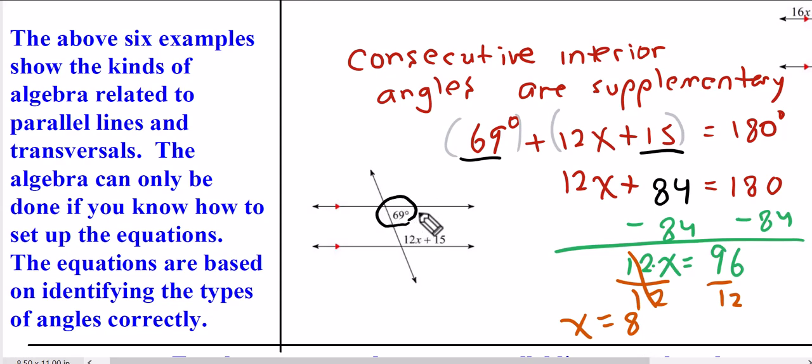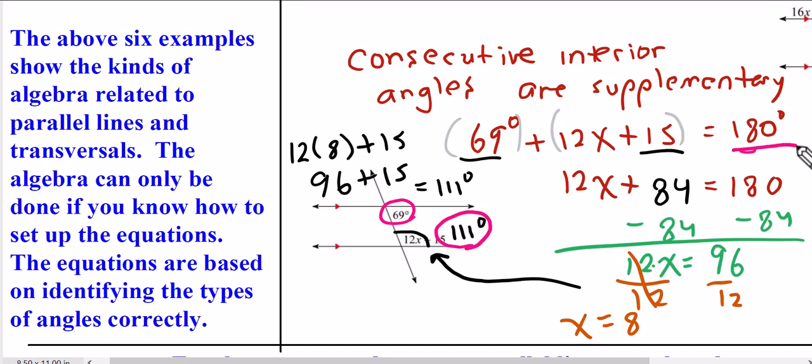Now, I know this angle is already 69 degrees. This is not 69 degrees. Observe that this is an acute angle, but this is an obtuse angle. We plug in an 8 for x. And we follow order of operations to simplify. 12 times 8 is 96. And if I add those up, I get 111 degrees. So this angle right here is 111 degrees. If you were to add this 69, plus this 111, you should get 180 degrees, because consecutive interior angles are supplementary.